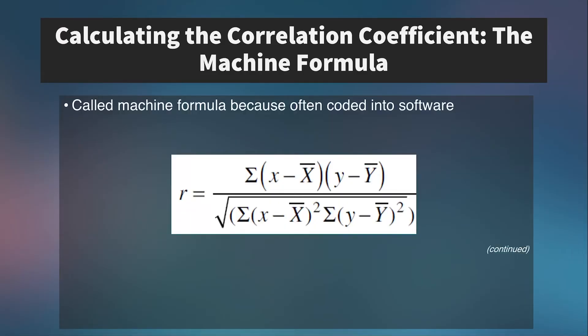There's a second formula called the machine formula, which is what's coded into most statistics programs. We typically don't calculate it by hand — we use a machine to do so. Although it doesn't use z-scores directly, baked into this formula are the score minus the mean for x and the score minus the mean for y, so in effect it uses standardized values of both the x and y variables.